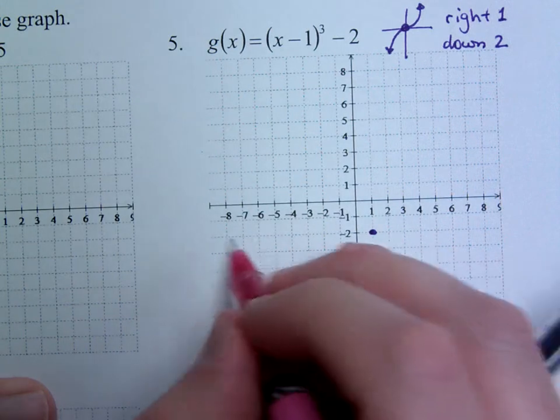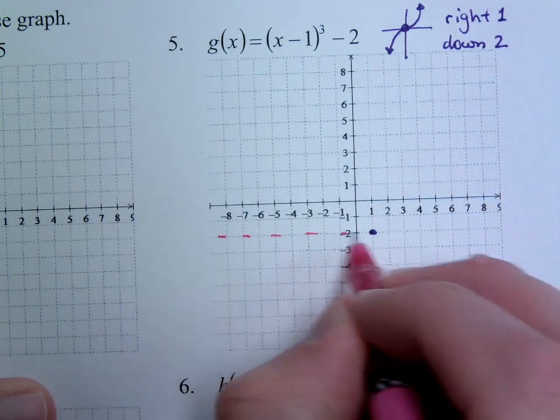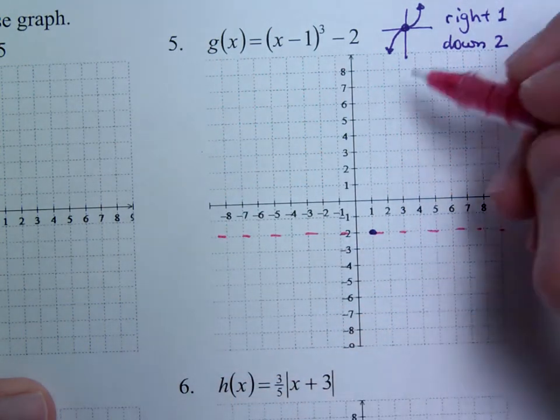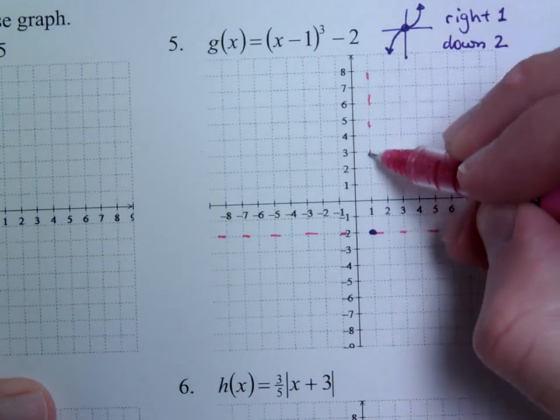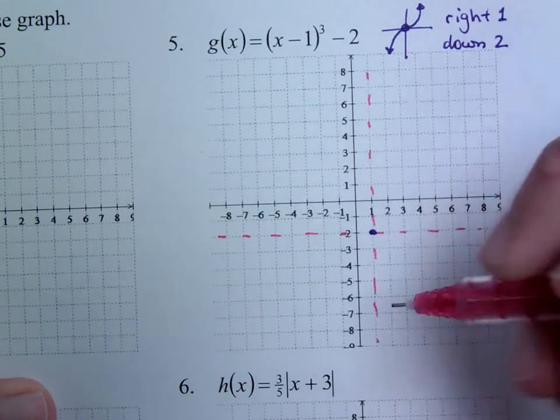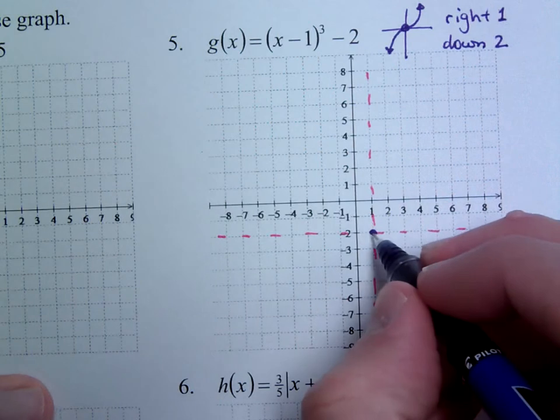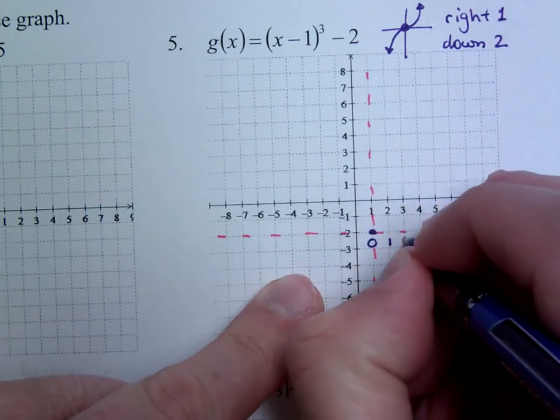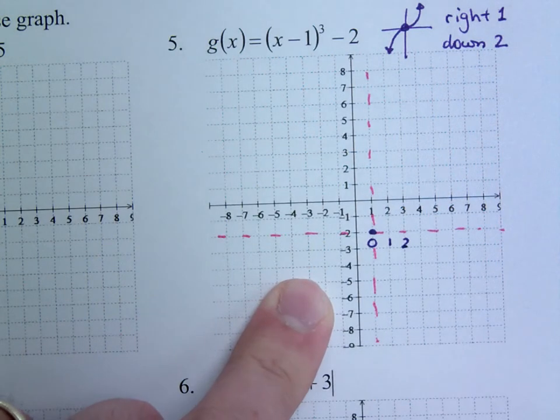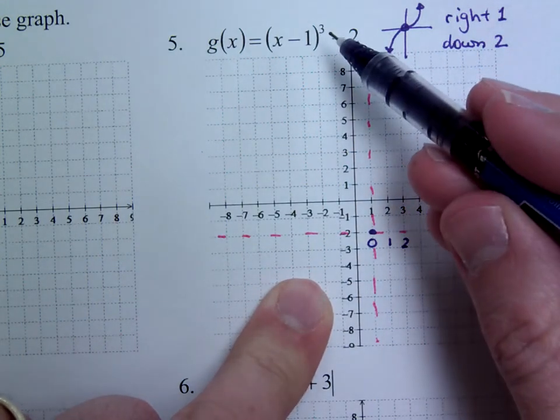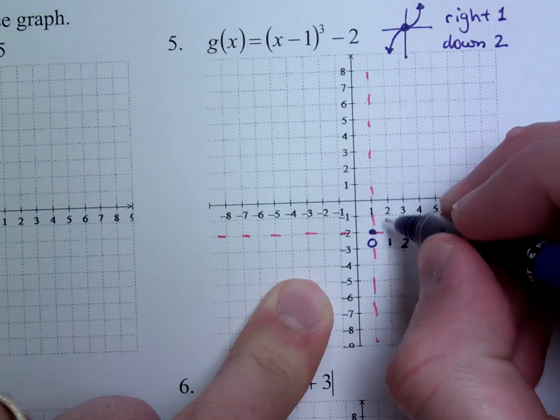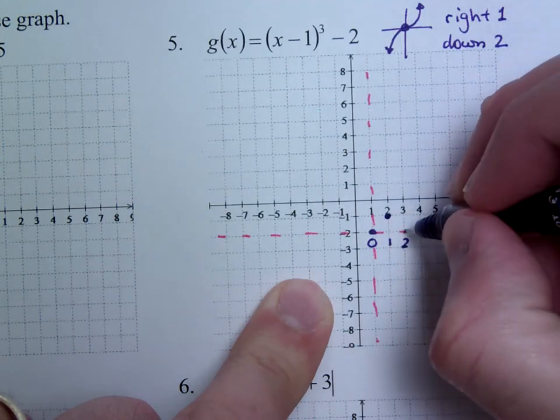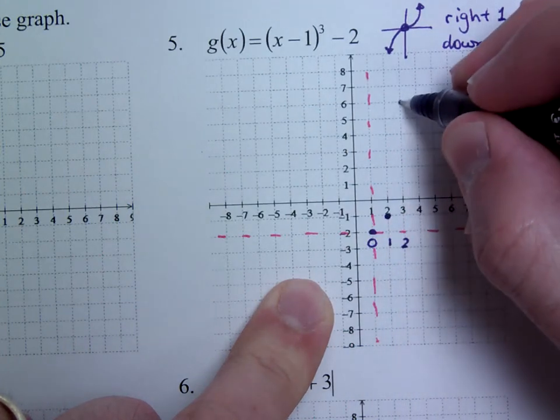And just like we've been doing with all of these, you create a new set of axes. So you treat this as though it's your origin. So here's 0, 1, and 2 out from that, and you follow the rules for the cubing function. 1 cubed is 1, 2 cubed is up 8, so it's going to be up here.